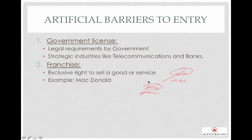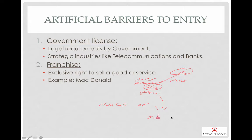This person becomes the master franchisor of Singapore and can choose to operate all the McDonald's outlets by themselves. Alternatively, they can sell the franchise ownership to sub-franchisors, breaking Singapore down into various districts like Orchard, Ang Mo Kio, and Serangoon, selling the rights to operate McDonald's to specific individual owners.